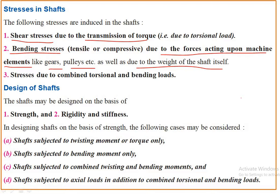Elements like gears, pulleys, and shafts are mounted on shafts. When stress is induced, it is bending stress. The first stress induced is shear stress. The second stress induced is bending stress. Shear stress is induced due to the transmission of torque, and bending stress is induced due to the self-weight of the shaft and the weight of mounted elements.